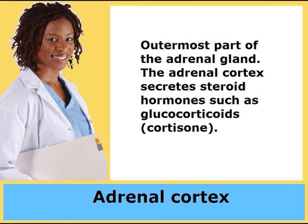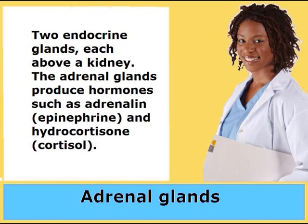Adrenal cortex: Outermost part of the adrenal gland. The adrenal cortex secretes steroid hormones such as glucocorticoids or cortisone. Adrenal glands: Two endocrine glands, each above a kidney. The adrenal glands produce hormones such as adrenaline or epinephrine and hydrocortisone or cortisol.